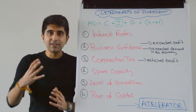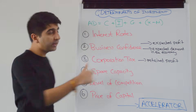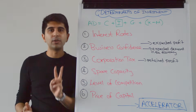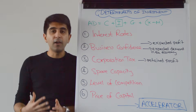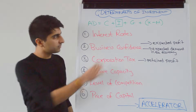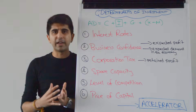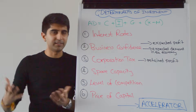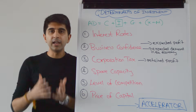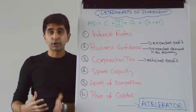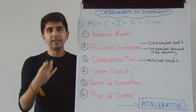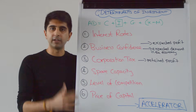So what factors can influence the level of investment? Well, interest rates can. Firms will finance investment in two main ways: either by borrowing money or by investing retained profits that they have. Interest rates are crucial when it comes to borrowing money. If interest rates are low in the economy, the cost of borrowing is low, meaning firms have a greater incentive to borrow money and invest. The marginal propensity to invest will increase if interest rates are lower.